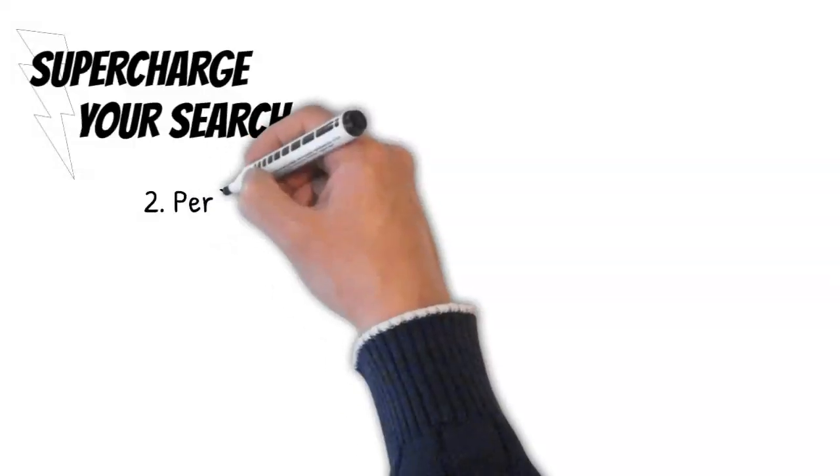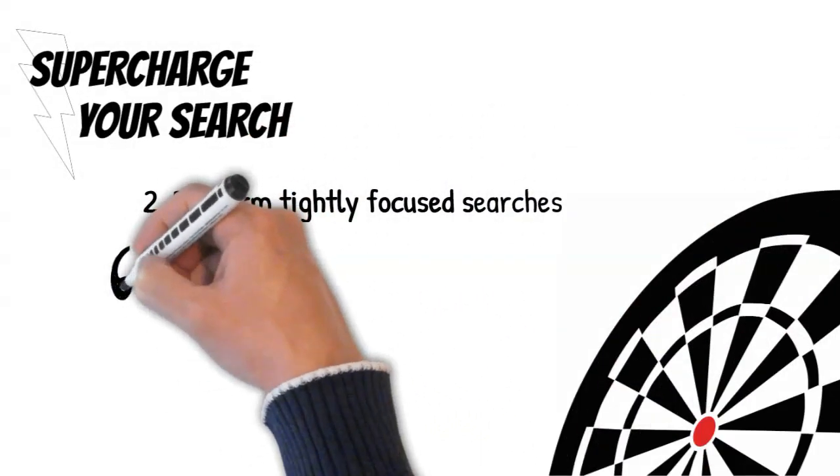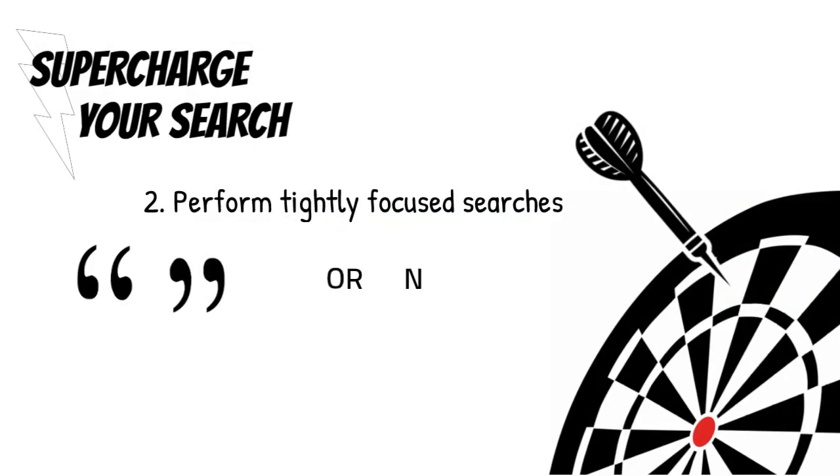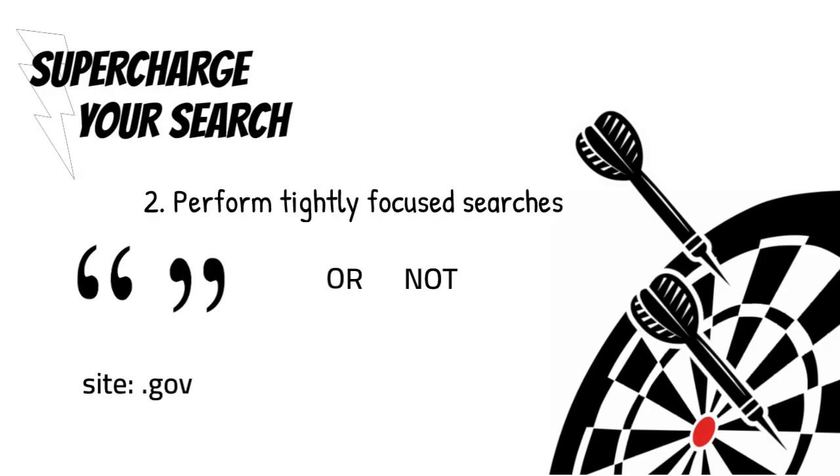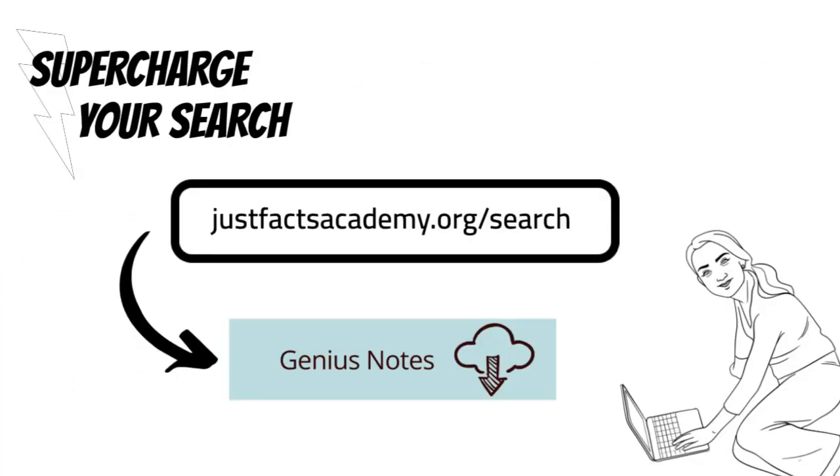Two, perform tightly focused searches. You can do this by using quote marks to find exact words or phrases, operators like or and not to expand and limit options, domain limiters to search for specific types of sites, and date limiters to search for materials published in specific time frames. Not too sure how to do this? Check out our handy notes that will quickly show you how.